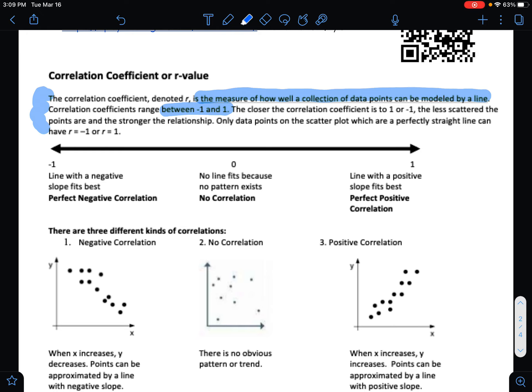If they're perfectly on a line and the line has a negative slope, that's when you have a correlation coefficient of negative 1. That's called a perfect negative correlation.